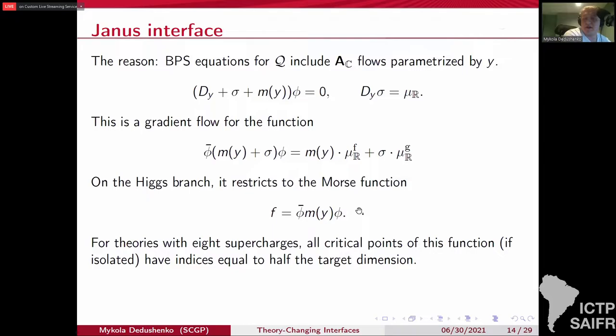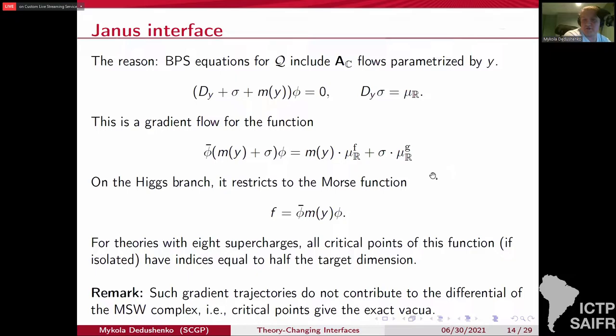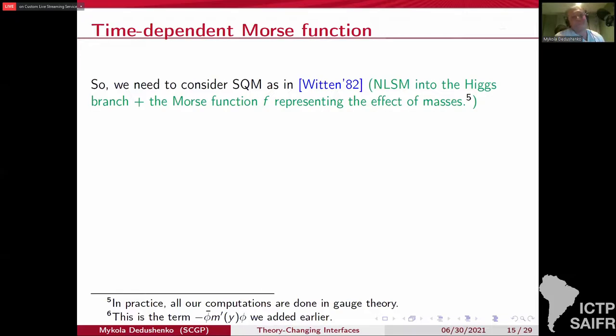So you get the corresponding gradient flows connecting these critical points. They don't really contribute to the differential on the Morse-Witten complex. So the critical points give you exact vacua. But these gradient flows nevertheless contribute to other things, like when you start changing your Morse function, start deforming your theory. And in particular, you can. So you see that here mass depends on y and y is our Euclidean time. So what we really have is a time dependent Morse function.